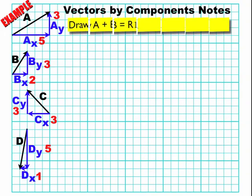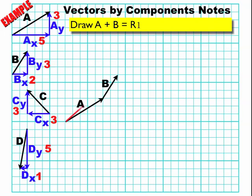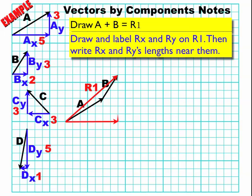Now, what I'm going to do is I'm going to add A plus B equals R1 using my graphical method. There's A, there's B, there's R1. And I can look at the components of R1 in the x direction and the y direction, my Rx and my Ry, and I can count the number of blocks and get my lengths, 7 and 6.